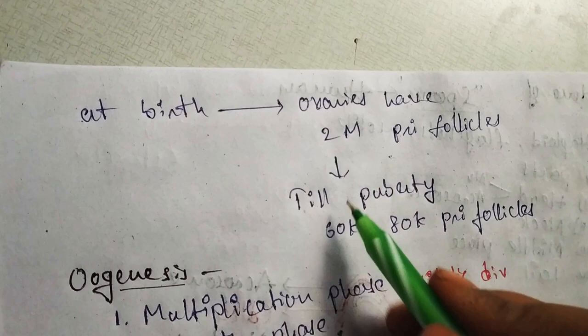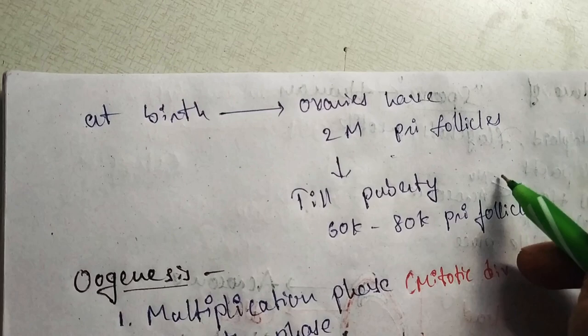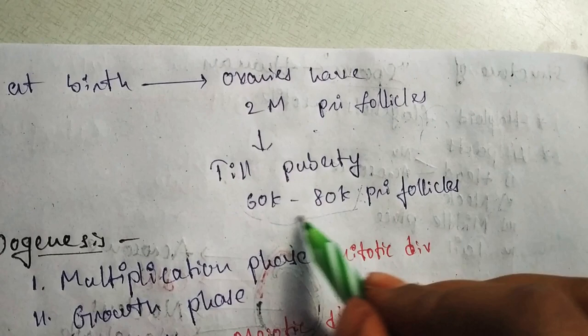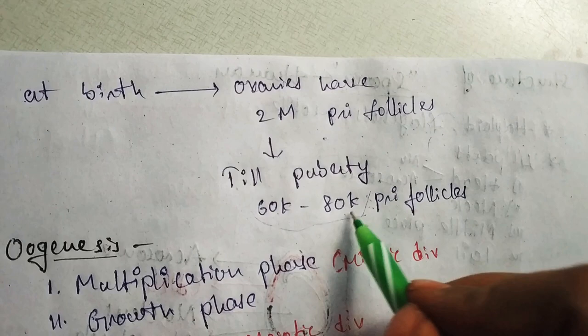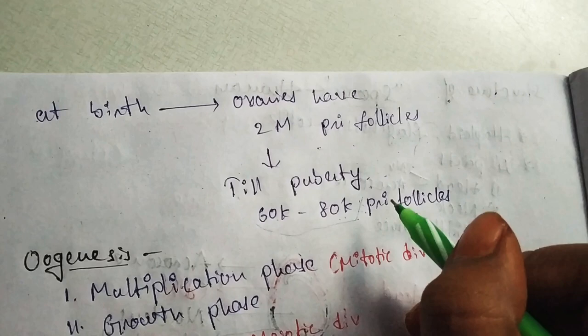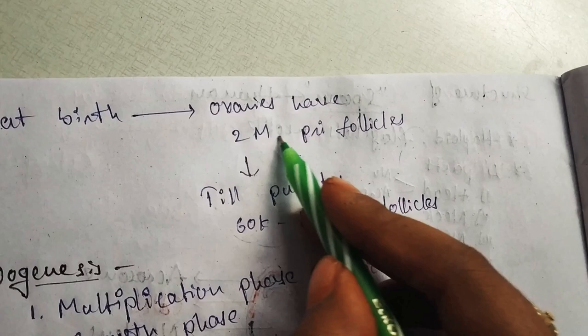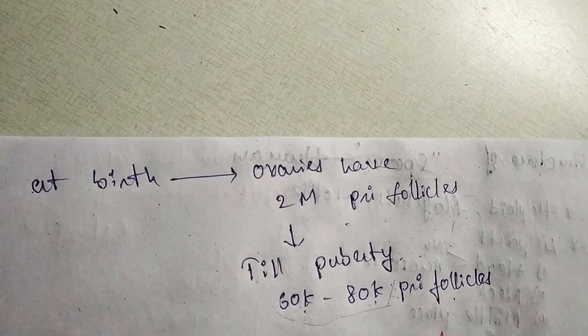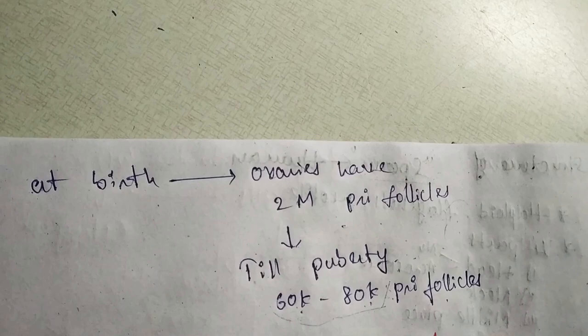Atresia and degeneration of primary follicles continues until puberty. Primary follicles continue to degenerate, so that at the time of puberty — which occurs at 12 to 15 years of age — only 60,000 to 80,000 primary follicles remain present in females. This is why oogenesis is a discontinuous process.